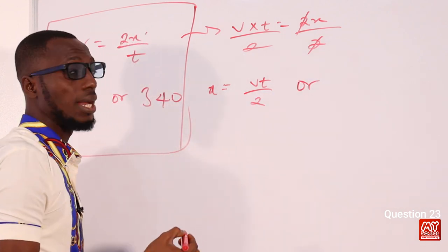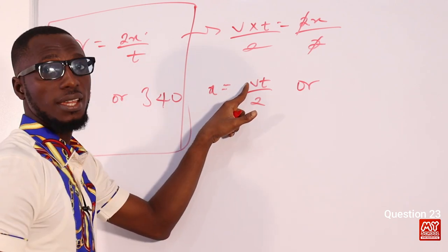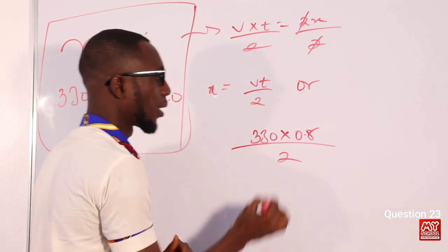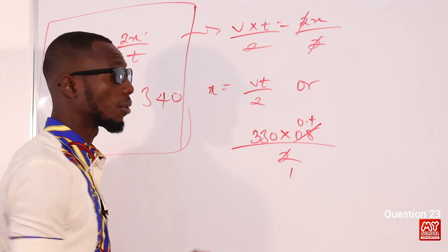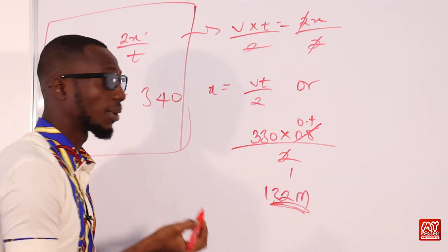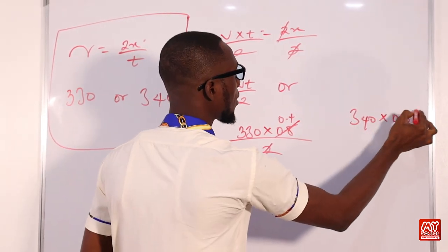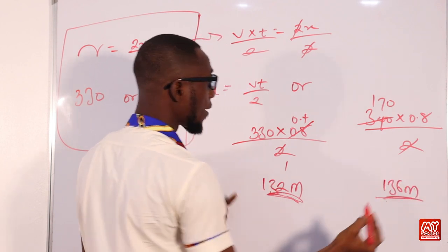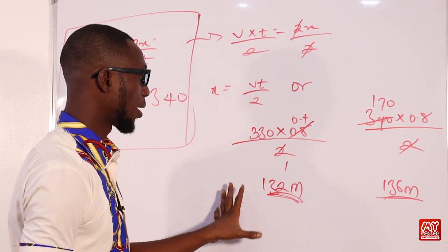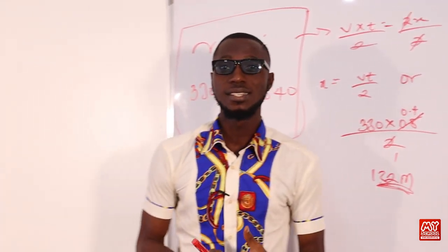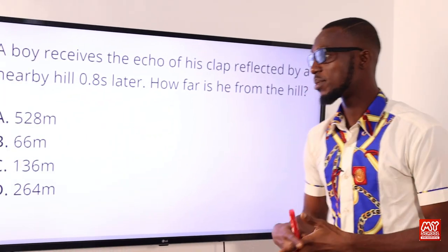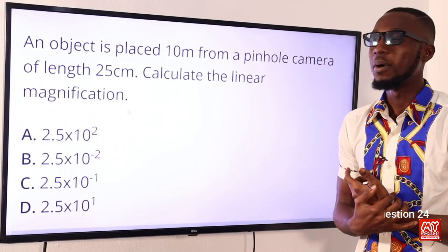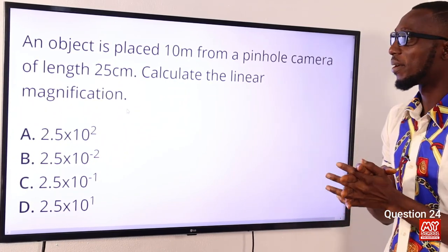Using v = 330 m/s: x = (330 × 0.8) / 2 = 132 m. Using v = 340 m/s: x = (340 × 0.8) / 2 = 136 m. Since 132 is not among the options but 136 is, the most viable answer is 136 m. The correct option is option C.